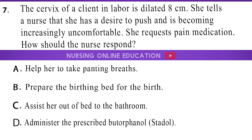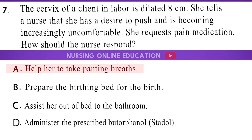Question 7. The cervix of a client in labor is dilated 8 cm. She tells a nurse that she has a desire to push and is becoming increasingly uncomfortable, and requests pain medication. How should the nurse respond? A. Help her to take panting breaths. B. Prepare the birthing bed for the birth. C. Assist her out of bed to the bathroom. D. Administer the prescribed butorphanol (Stadol). The answer is option A: Help her to take panting breaths.